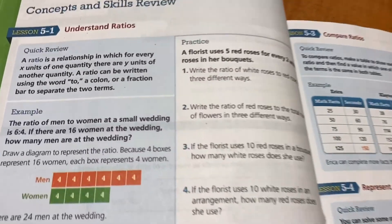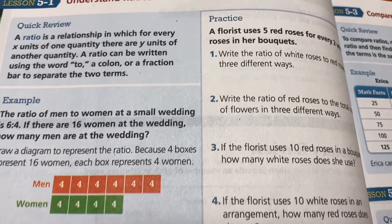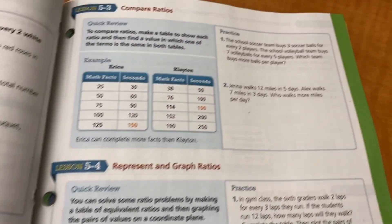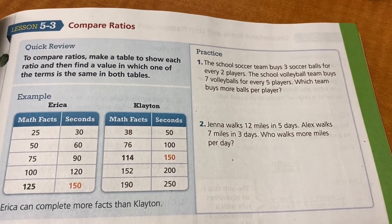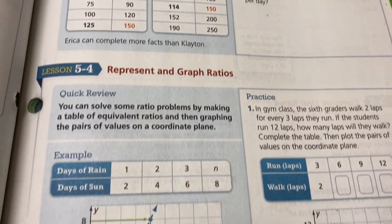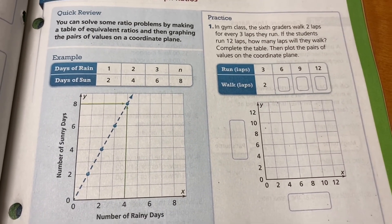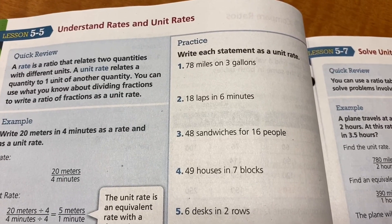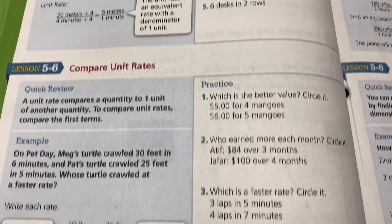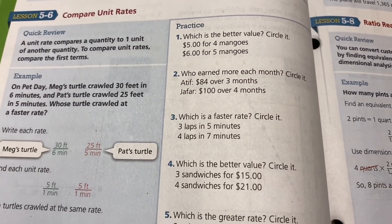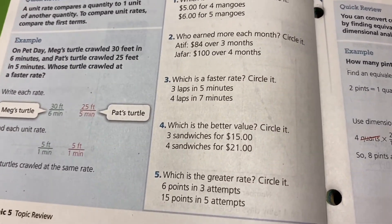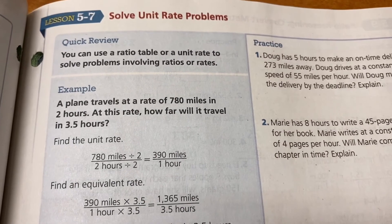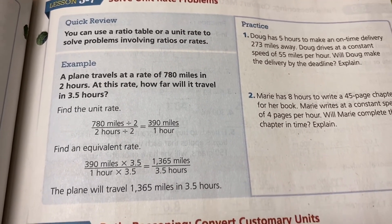Topic five covers ratios — equivalent ratios, comparing ratios, and graphing ratios. And don't forget rates and unit rates and comparing unit rates.